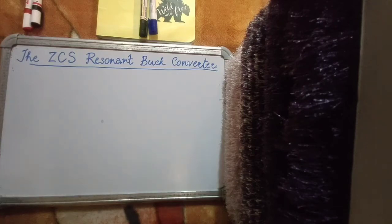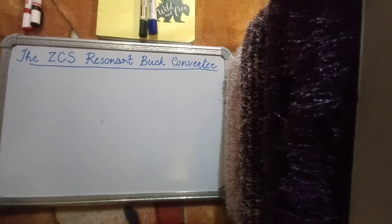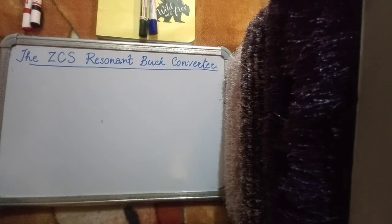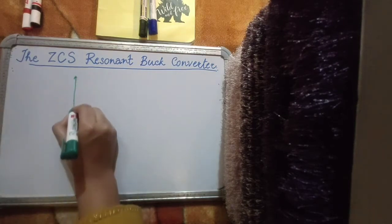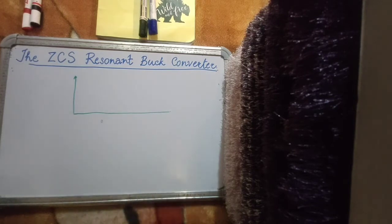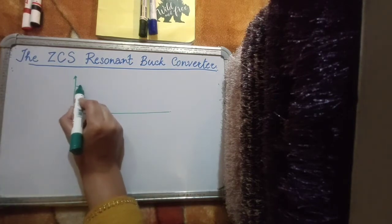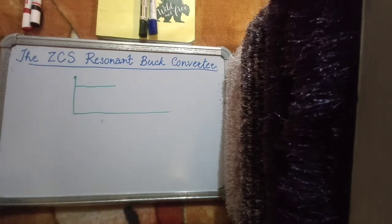Welcome to the 14th lecture on modern power electronics. We have started with resonant converters or soft switching techniques in DC to DC converters. In the last lecture I briefly introduced you to the concept of resonant converters. We discussed that with a proper switching strategy coupled with an LC tank circuit we can modify the switching characteristics of a device such that it may turn on or turn off at zero voltage or at zero current, and hence the losses will be minimized.